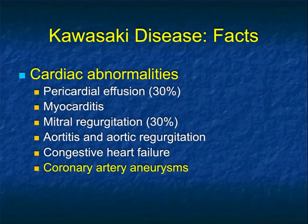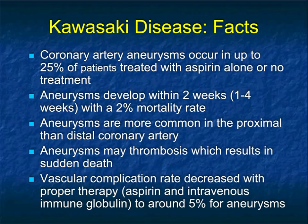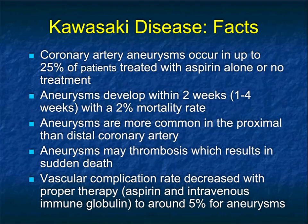Coronary artery aneurysms are a key finding, but there are many cardiac issues — from pericardial effusion to mitral regurgitation, myocarditis, aortitis and aortic regurgitation, and congestive heart failure. Coronary artery aneurysms occur in up to 25% of patients treated with aspirin alone or no treatment. The aneurysms develop fairly quickly, with mortality rate approaching 2%. They are typically more common in the proximal than distal coronary vessels, but can be in any part. Aneurysms may thrombose, which can lead to sudden death. Vascular complication rate is decreased with proper therapy, and early diagnosis is key.